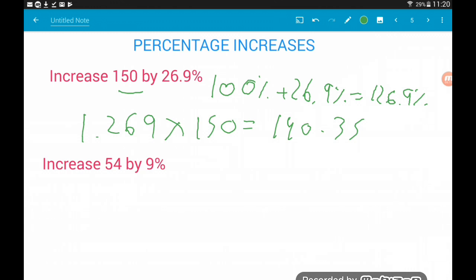Okay, our final increase question here. Increase 54 by 9%. So the 54 is the 100% that we're starting with. We want to increase it by 9%. So 100% add 9%, well that's going to give us 109%. So the decimal equivalent of 109% is 109 divided by 100, which is 1.09. So we multiply that by 54. And that will give us 58.86. Again, make sure you get the same answer. Okay, so that's our first four increase questions. Let's have a look at decrease.